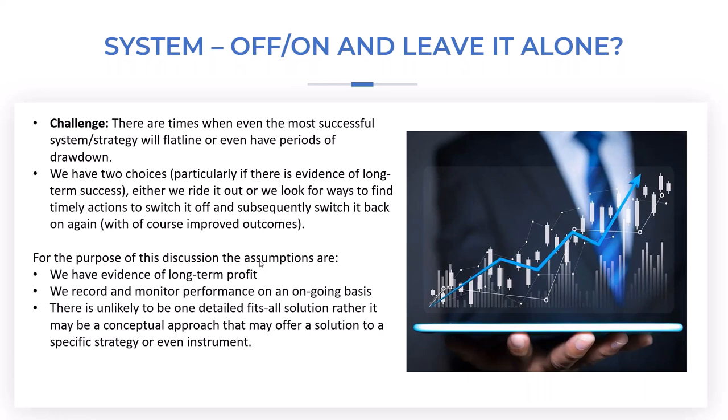For the purposes of this discussion, the assumption is we have evidence of long-term profit and we continue to monitor over a long-term period. We're looking for solutions for a specific strategy. It's not likely that a good time to trade the NASDAQ is a bad time to trade the USD and vice versa — it doesn't necessarily mean gold and copper are good places to be either. We need to have an open mind, looking for a broad solution initially, and if we have evidence the concept works we can hone down. For terminology, we're going to call this 'switching' — where we intervene to switch a strategy off and on.